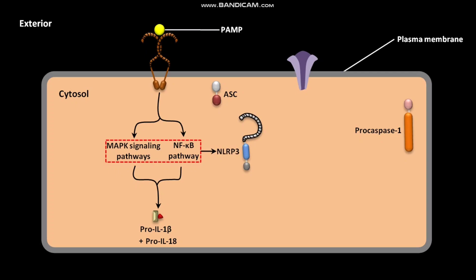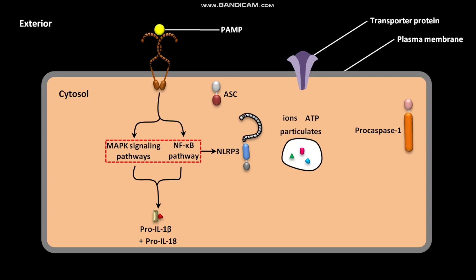The plasma membrane of the cell has transporter proteins. Various activators like ATP, particulates, and ions present exterior to the cell pass through the channel of transporter proteins and reach the cytosol. This process of passing from the exterior of the cell to the cytosol through the transporter protein channel is called influx.